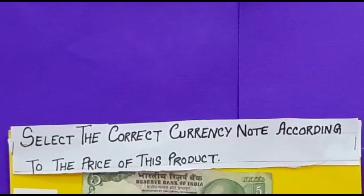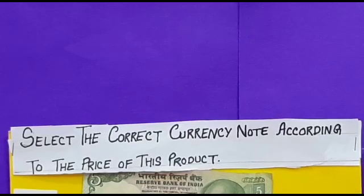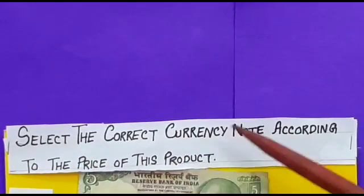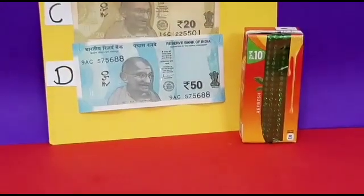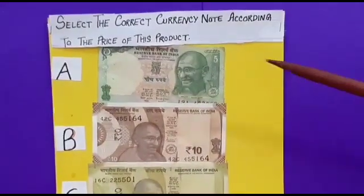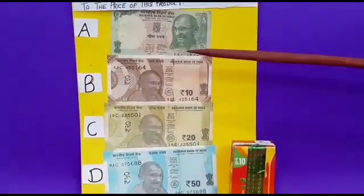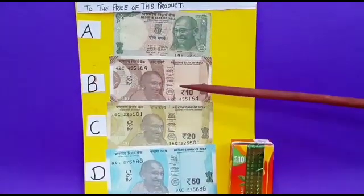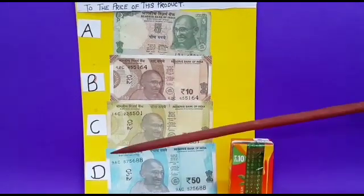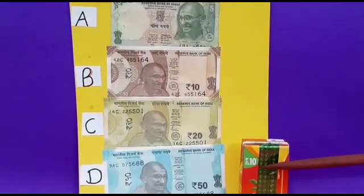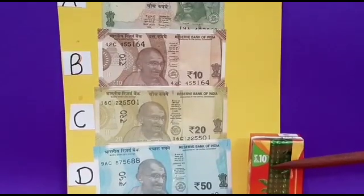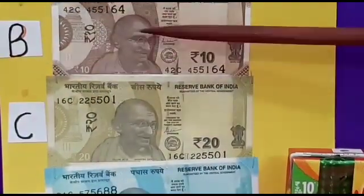Now students, we will solve a question based on the Punjab achievement survey. Our question is: select the correct currency note according to the price of this product. We have a small packet of juice with rupees 10 written on it. We have 4 options — A: rupees 5, B: rupees 10, C: rupees 20, D: rupees 50. The price of this juice packet is rupees 10, so our answer will be rupees 10, option B.